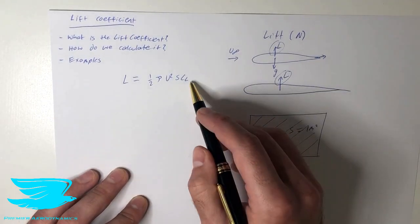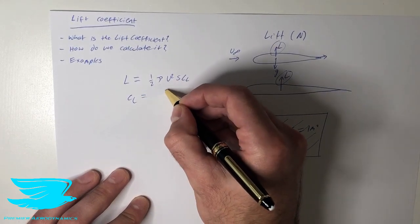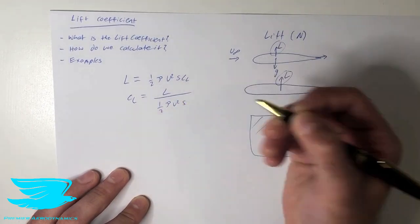Finally, we have the lift coefficient. So to get the lift coefficient, we just rearrange this equation to go lift coefficient equals the lift divided by half rho v squared s.